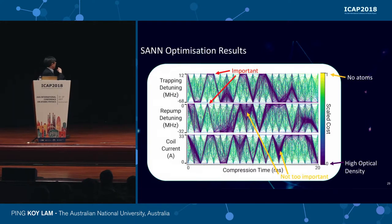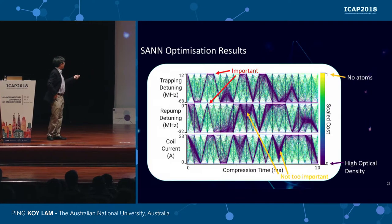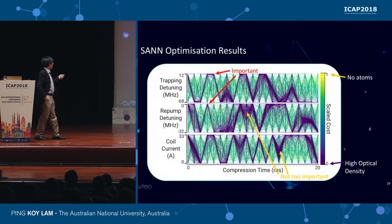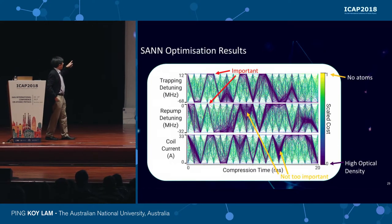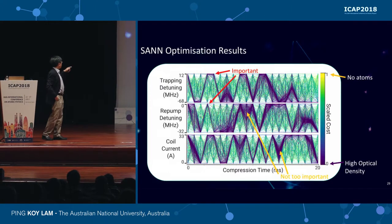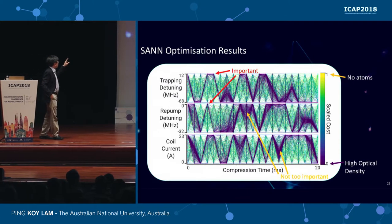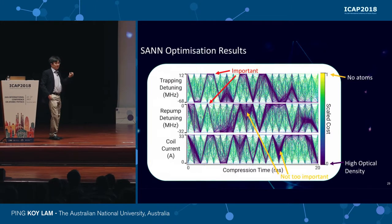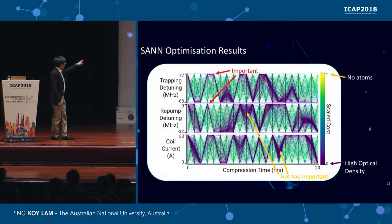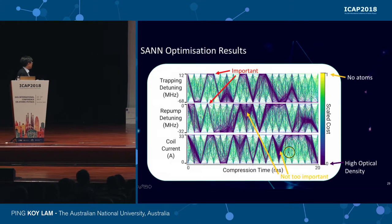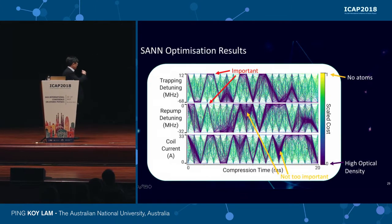The final result is shown in this diagram. We have a range from no atoms — a bad parameter set — to a very high optical density. Following the blue lines gives the experimental settings the neural net asks us to perform for trapping detuning, repump detuning, and coil currents. Some data points are very specific — the two red ones, for example, require you to be at exactly that data point to get very high optical density — while certain yellow data points are less critical and can be set to a range of values and still give relatively good optical density.